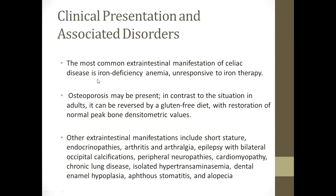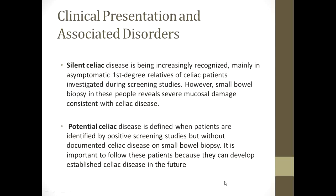The most common extra-intestinal manifestation of celiac disease is iron deficiency anemia, which is usually unresponsive to iron therapy. Secondly, osteoporosis may be present; in contrast to adults, it can be reversed by a gluten-free diet with restoration of normal peak bone density values. Other extra-intestinal manifestations include short stature, endocrinopathies, arthritis and arthralgia, epilepsy with bilateral occipital calcifications, peripheral neuropathies, cardiomyopathy, chronic lung disease, isolated hypertransaminasemia, dental enamel hypoplasia, aphthous stomatitis, and alopecia.